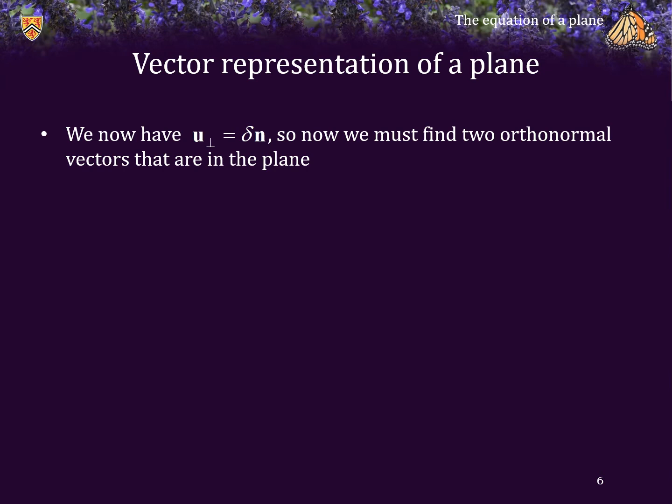Alright, we now have U perp equaling delta times N, so now we must find two orthonormal vectors that are in the plane.